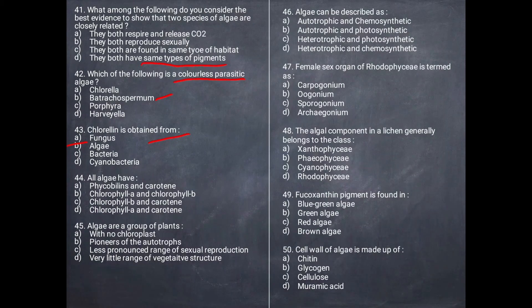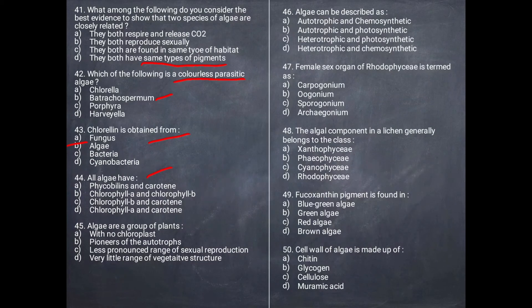Next question: All algae have what in common? We find chlorophyll A and beta-carotene in every alga. The correct answer is B — chlorophyll A and carotene.